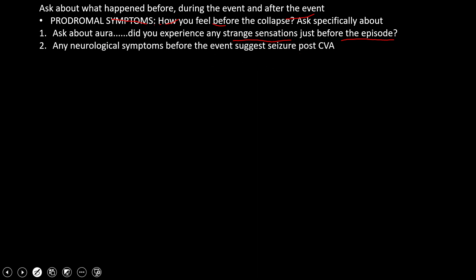We will ask about any neurological symptoms before the event. Sometimes the patient may develop one-sided weakness due to a hemorrhage or an ischemic clot, leading to the patient becoming unconscious and having seizures. We will also ask whether the patient had any severe headache before the collapse, as this could suggest subarachnoid hemorrhage leading to collapse.